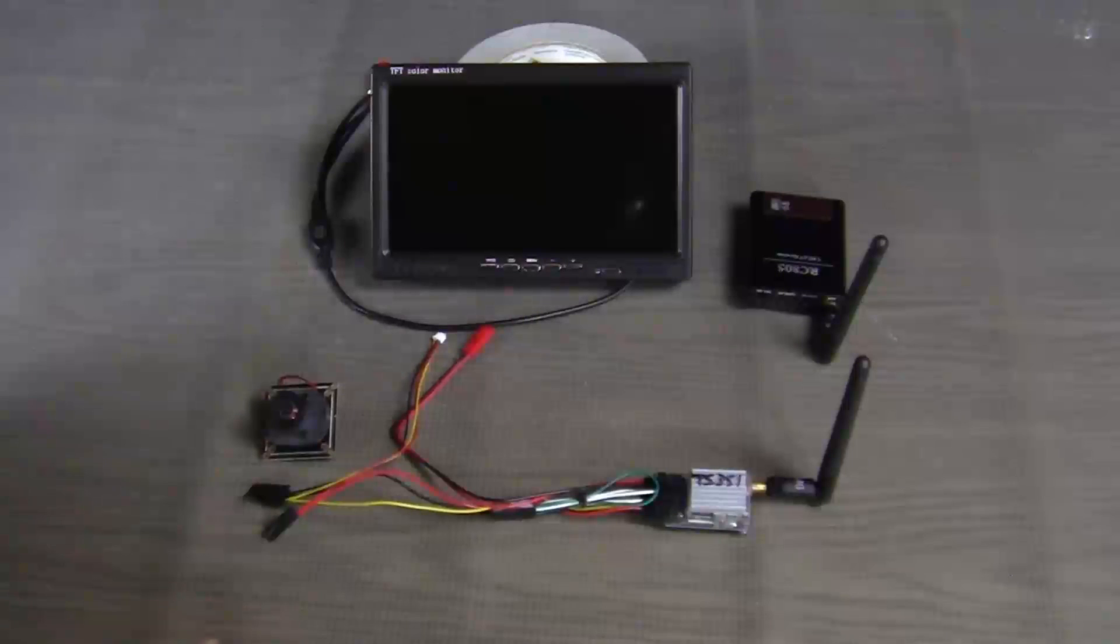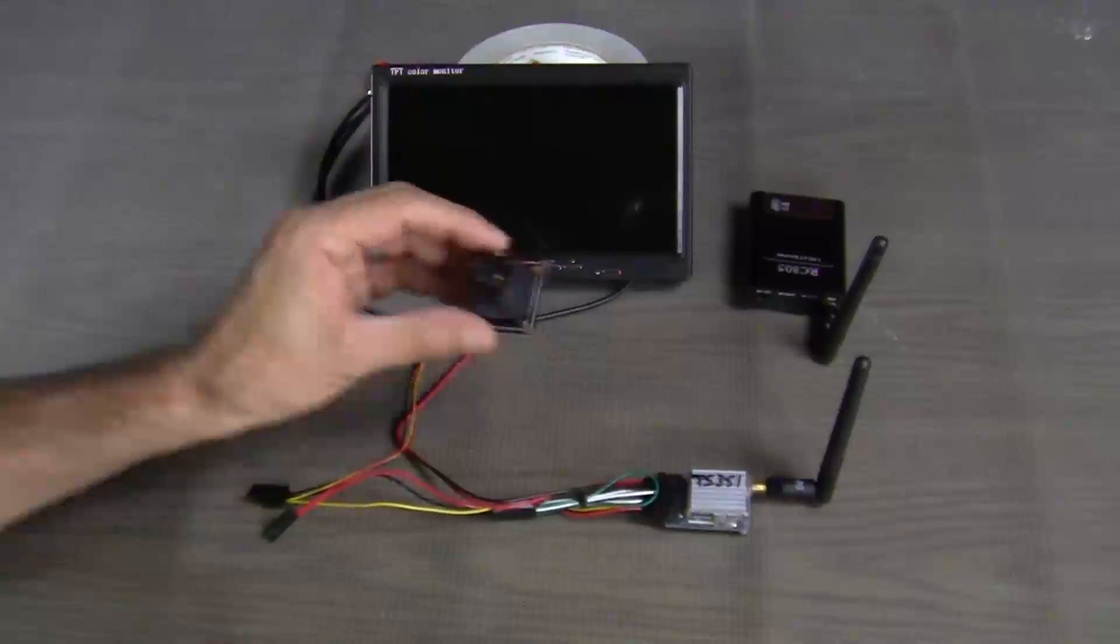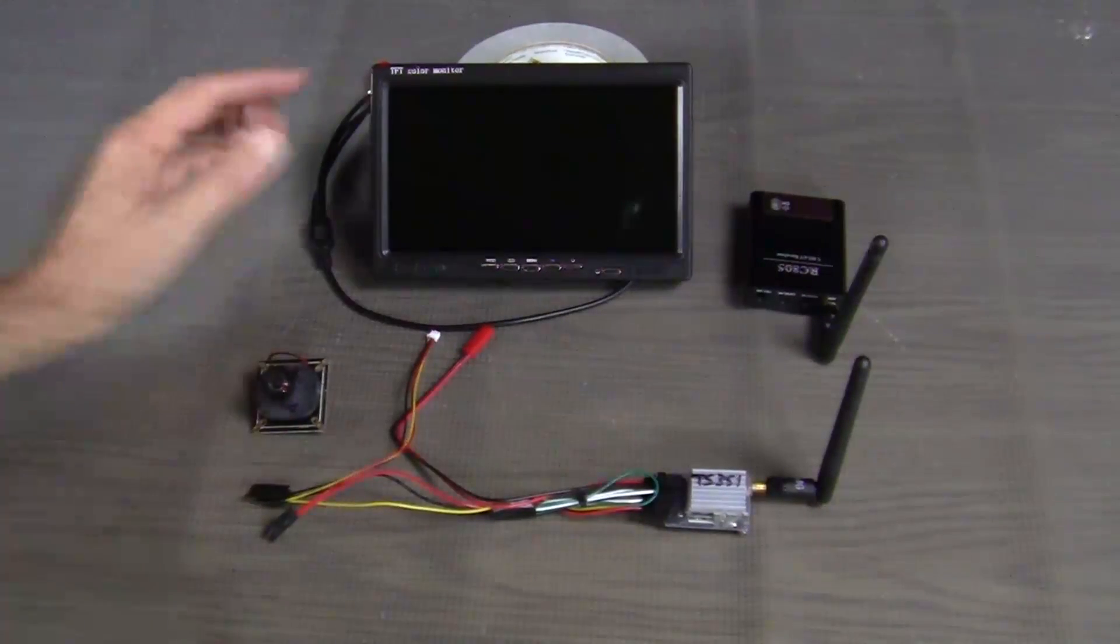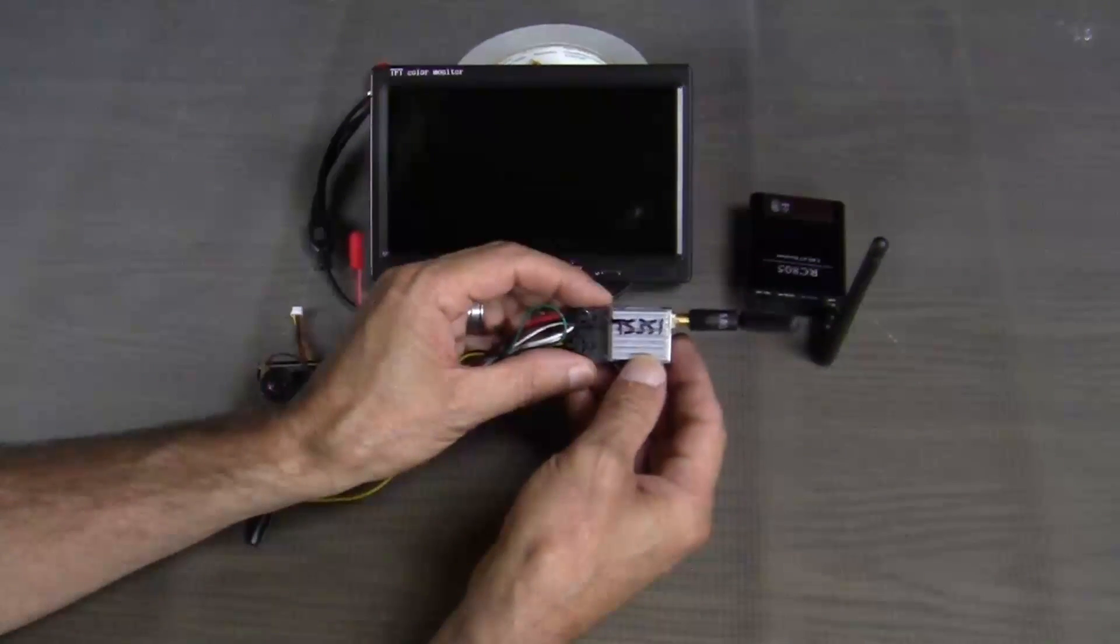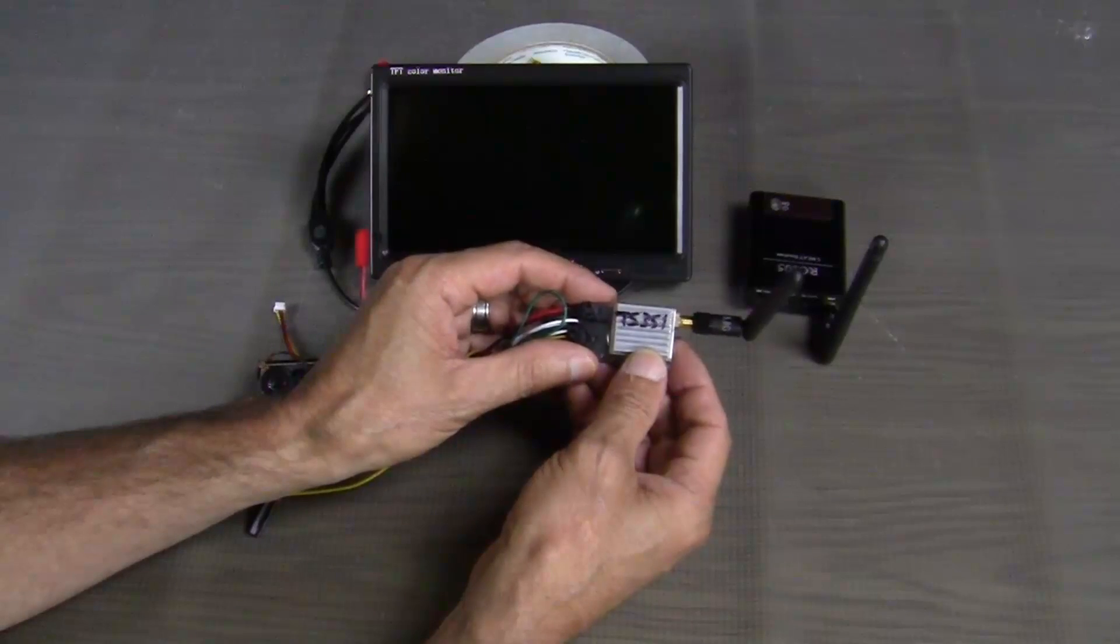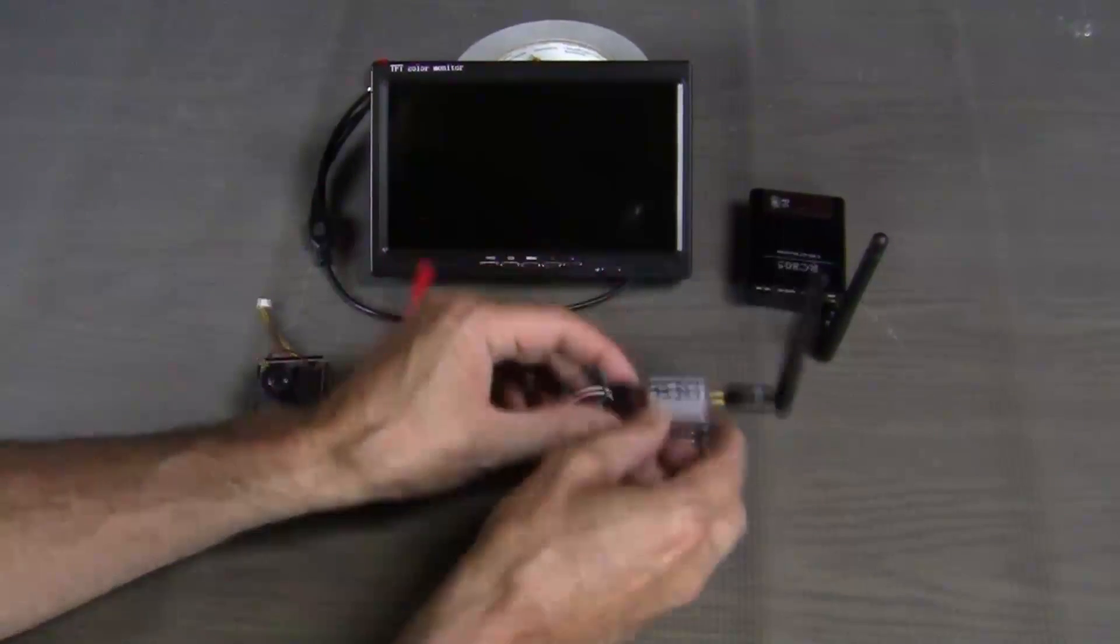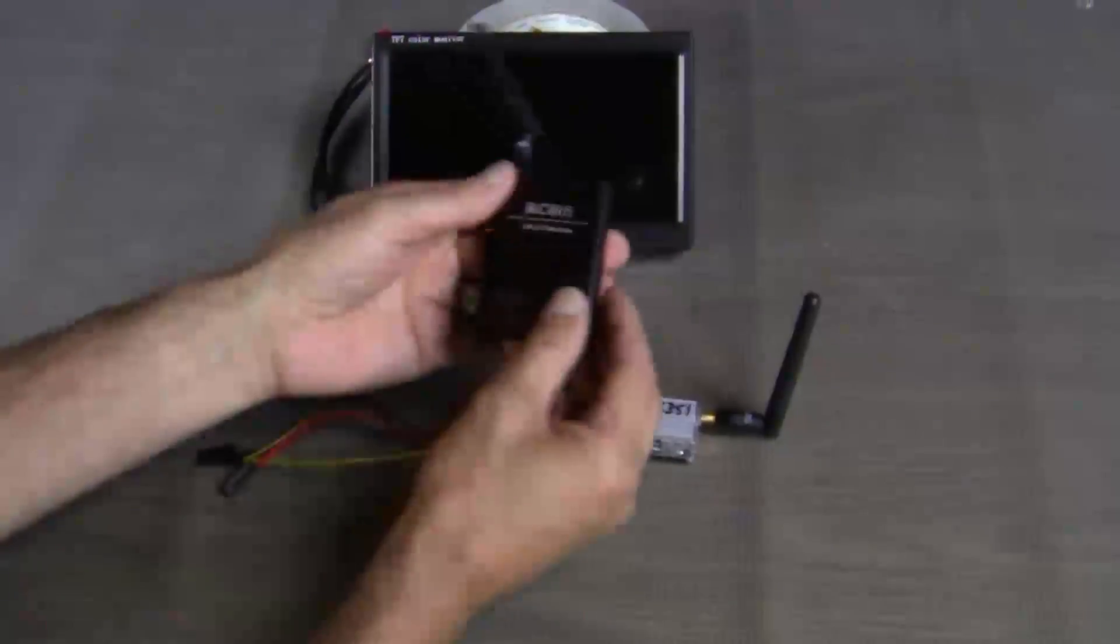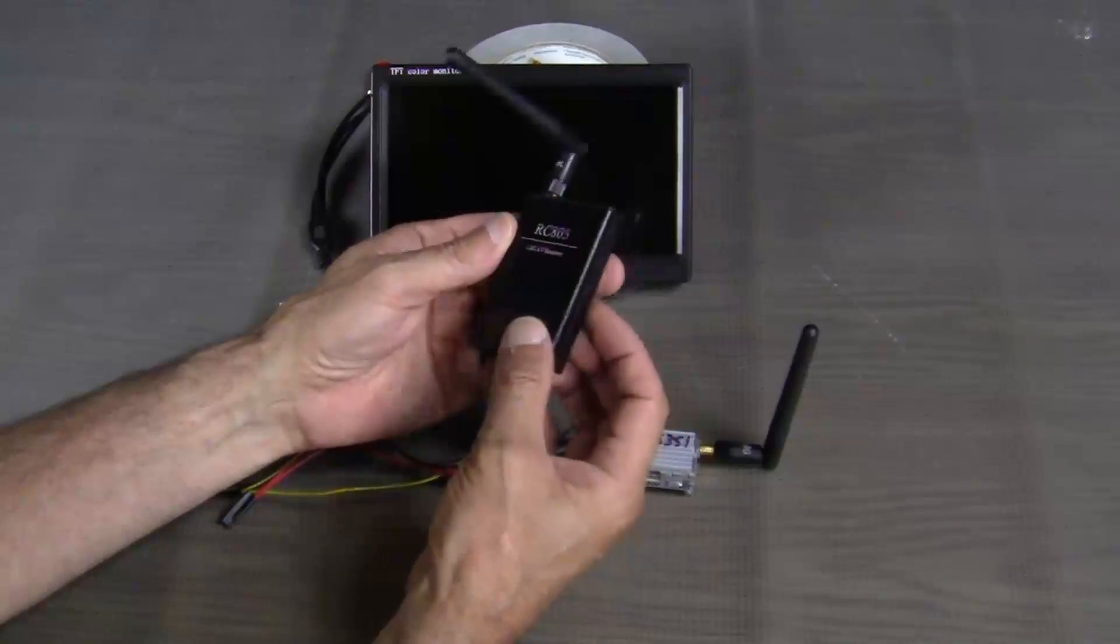So let's get started. Here are the main components for building our FPV system. We have a little day-night vision camera, a 7-inch color monitor, the BossCam TS351 FPV transmitter, and the BossCam RC805 FPV receiver.